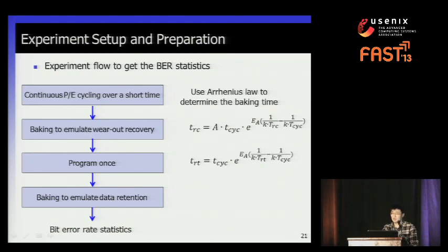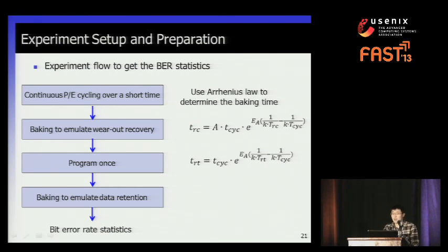We also need to obtain error rate statistics. We run 10,000 PE cycles in a few hours, but in real applications such cycling usually takes a month or two years. So we bake the chips to emulate this process. We program random data into the chips, then bake the chips to emulate one month of retention time. Finally, we read out the data and compare it with the original data to get the page error rate statistics. The latency of sensing one extra level is estimated based on the read latency difference between the upper page and the lower page.